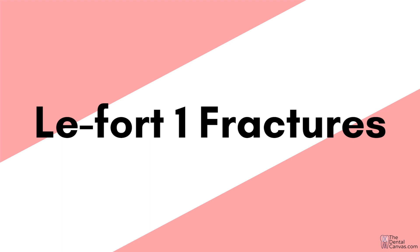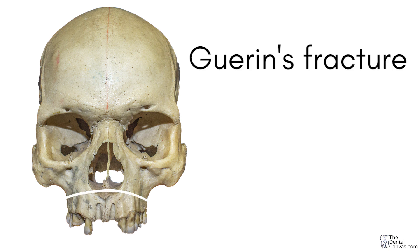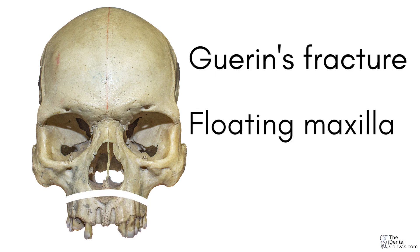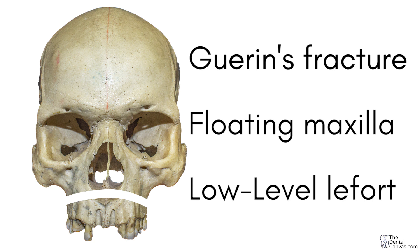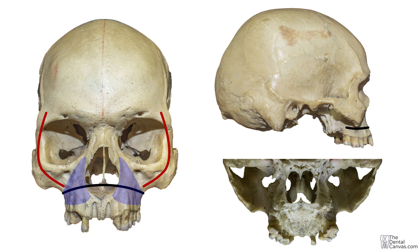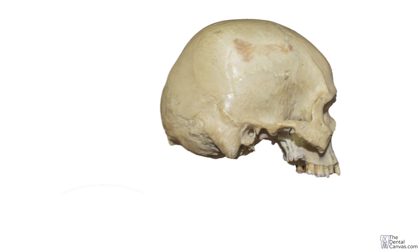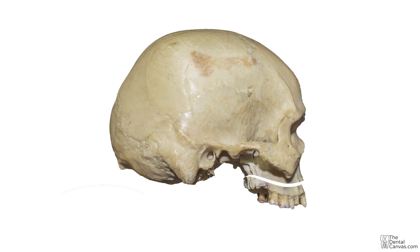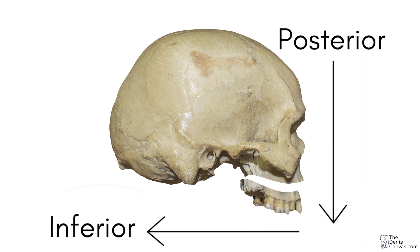Le Fort one fracture, which is also known as Guerin fracture or a floating maxilla or low-level Le Fort fracture. The fracture line emanates apical to maxillary teeth involving the lower one-third of nasal septum and lateral wall of anterior nasal aperture. It then runs laterally along the lateral wall of maxillary sinus below the zygomatico-maxillary buttress, extends posteriorly behind the tuberosity and fracturing the lower one-third of pterygoid plates. Pull of medial and lateral pterygoid muscles contribute to displacement of the fragment in a posterior and inferior direction.